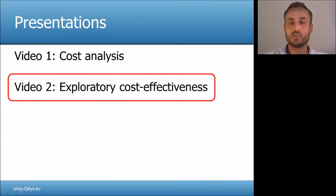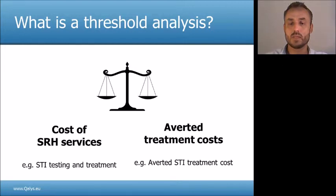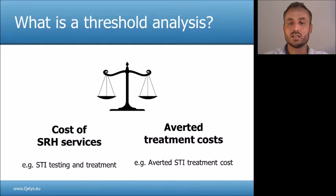The first video covered the cost analysis, and this second video covers exploratory cost effectiveness analysis which builds on the first part. So first, what is a threshold analysis? It is an analysis that compares the cost of delivering services with cost savings resulting from these services in terms of averted treatment costs. For example, on the left side there could be STI testing and treatment services, and on the right side there would be averted treatment costs — in other words, cost savings resulting from the services.